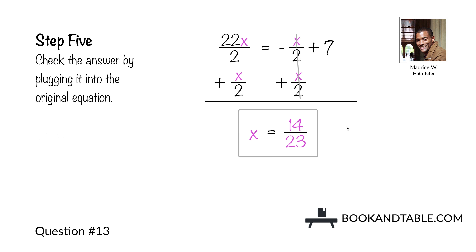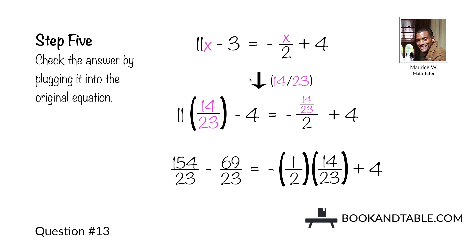Check this answer by plugging it into the original equation in both places where you see x. 11 times 14 would be 154 over 23. On the right side, we're placing a fraction in the numerator — remember, if you have a fraction in the numerator or denominator, you can simplify it by multiplying the numerator by the reciprocal of the denominator. The reciprocal of the denominator is 2 over 1, so you multiply by 1/2. 14/23 times the reciprocal of the denominator, plus 4.